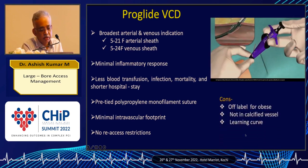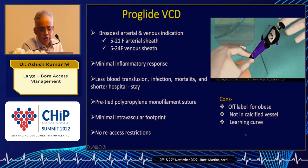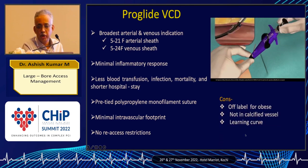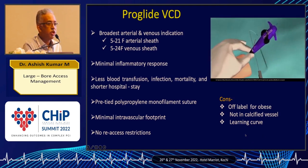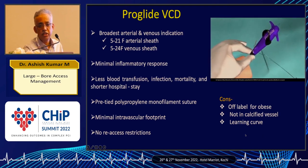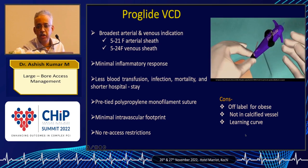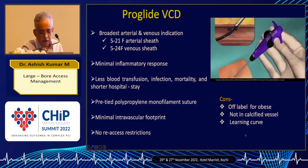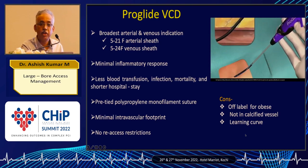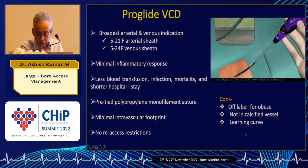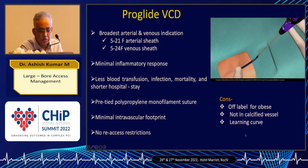The disadvantages of the ProGlide are that in calcific vessels the sutures might not hold, and even if they hold it might not be possible to oppose the edges, leading to persistent bleeding. Compared to collagen-based devices, there is a learning curve, especially when dealing with large bore access requiring more than one ProGlide.